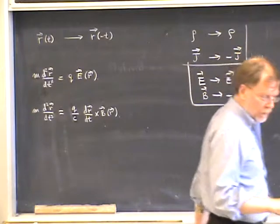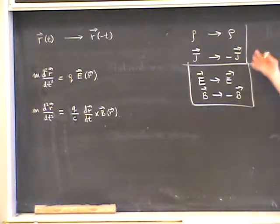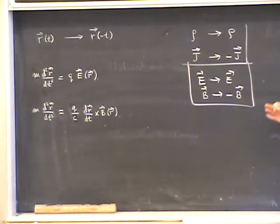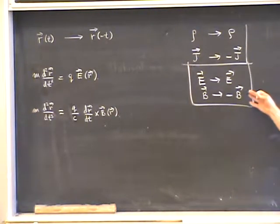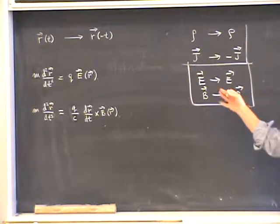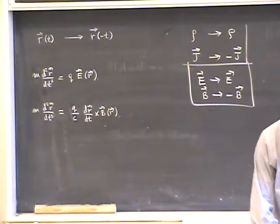So there are two lessons here. First, time-reversal invariance depends on the definition of the system. But another lesson is that the electromagnetic forces are actually invariant under time reversal if you include the electromagnetic fields themselves.